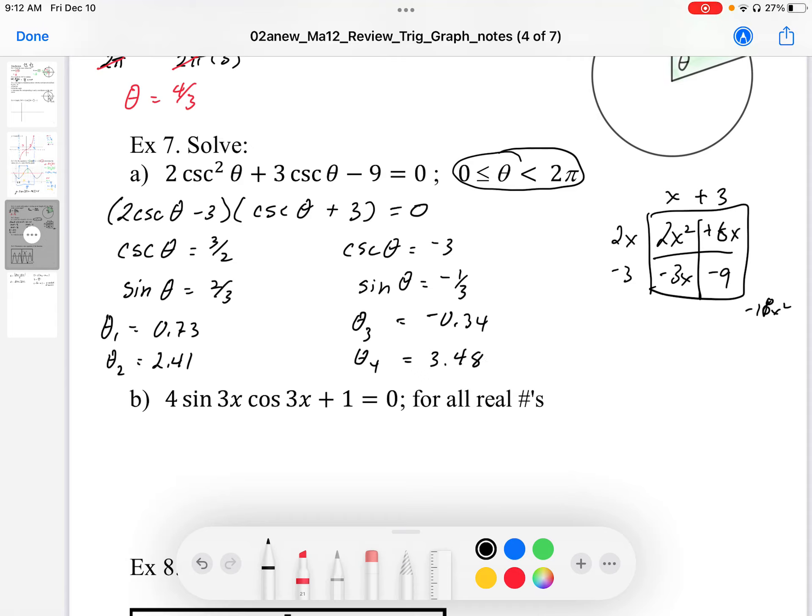So then again, I know my period is going to be 2 pi because there's no horizontal compression or expansion on that angle. So my period is 2 pi. So I know that I have one period worth of solutions here. And that one period fits the domain that I was given here.